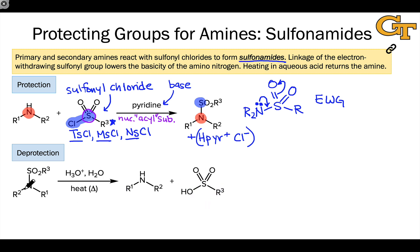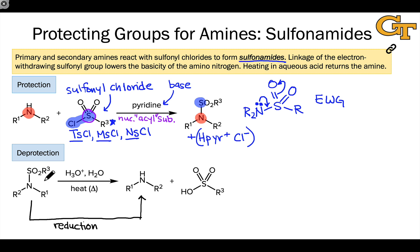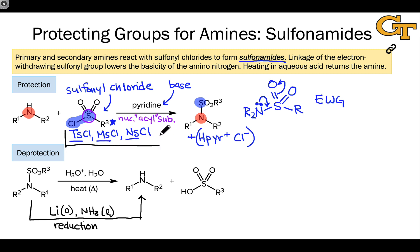If acidic deprotection conditions are a problem for other functionality in the molecule, there's an alternative approach involving reducing conditions. The sulfonyl group — sulfur linked to two oxygens — is highly oxidized, and we can reduce it to ultimately liberate the free amine. How this is typically done is using lithium metal (lithium zero, not Li⁺) in liquid ammonia. The sulfonyl group is quite popular for protection of amines, and you'll often see it abbreviated in reaction schemes as Ts, Ms, and Ns. When you see these connected to nitrogen, you're looking at a sulfonyl-protected amine.